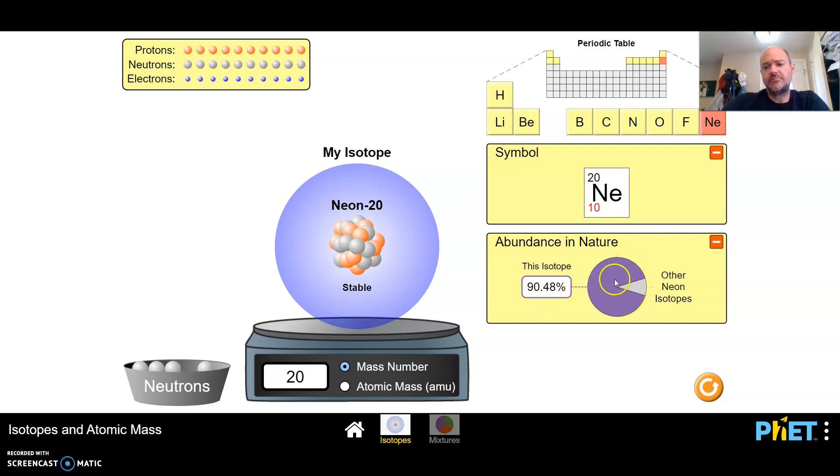This is not as dominant as hydrogen one. Hydrogen one was 99.9. This is 90.48. So there are some other isotopes of neon that are relatively common.